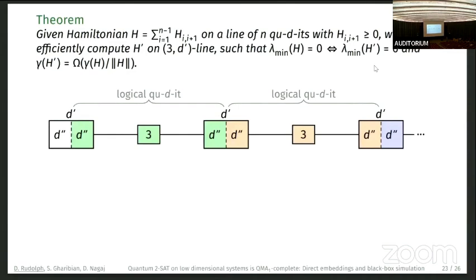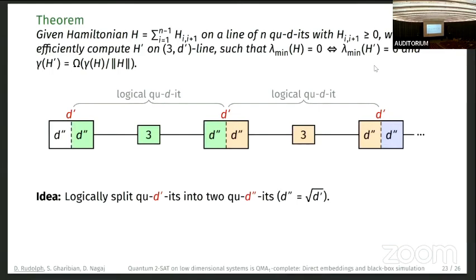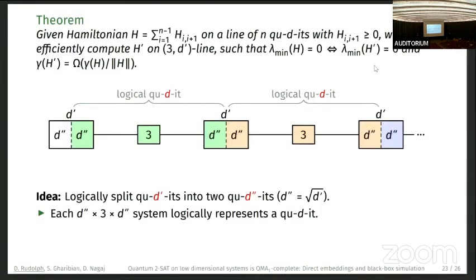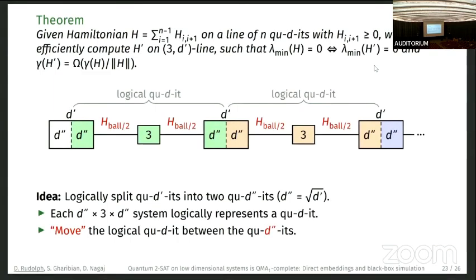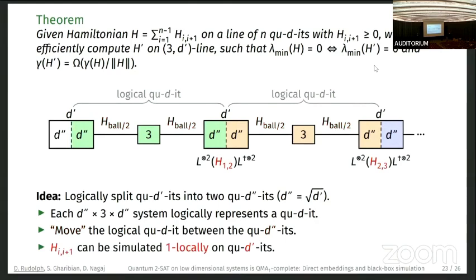The construction logically splits each qd'-system into two qd''-systems, where d'' is the square root of d'. Each d'' × 3 × d'' system logically represents one qudit. We need to move the logical qudit between the two qd'' systems, and for this we use what we call H_ball — named after a balls-and-bins model used to implement this gadget. Because the information is available one-locally, it suffices to build gadgets with just one-local terms: we can place a term h_{1,2} up to a local isometry.